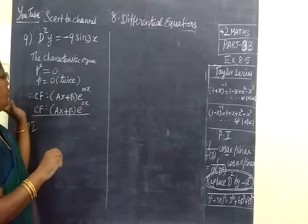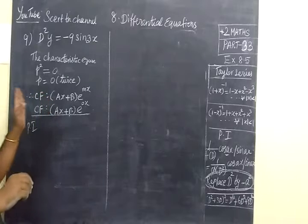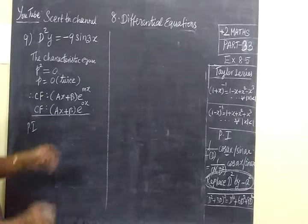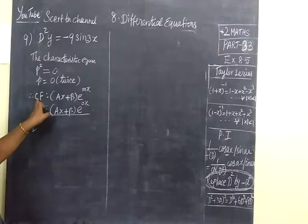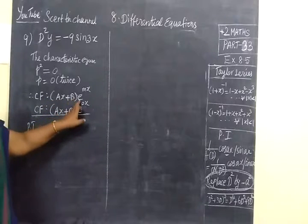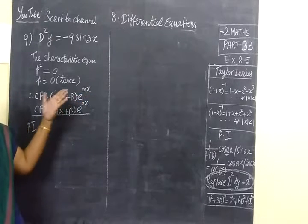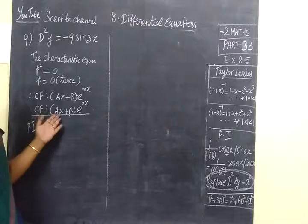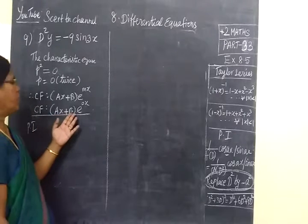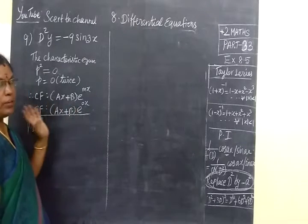The roots are 0, 0 - that means repeated roots. So the complementary function is A + Bx times e^(mx). With the x time factor, the complementary function equals A + Bx times e^(0x), which is 1.